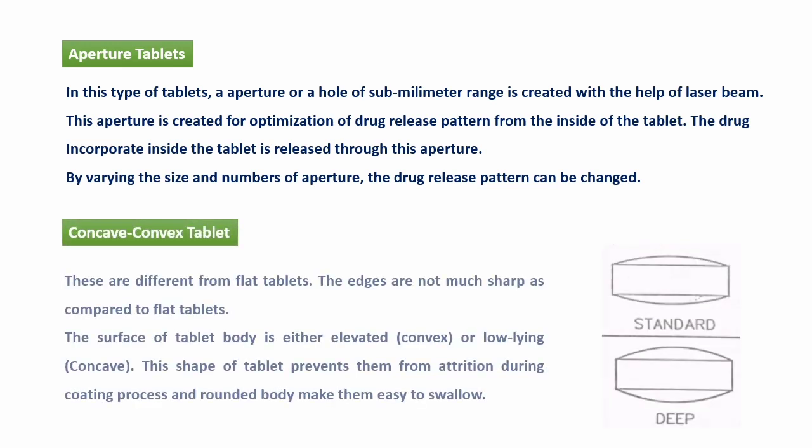Concave/convex tablets — ये simple compressed tablets हैं जिनका shape image में देखा जा सकता है। अगर tablet की surface उठी हुई है तो it is called a convex tablet, और अगर surface थोड़ी गहरी है तो वो concave tablet है। इस तरह की surface होने से coating के time tablet के किनारे breakdown नहीं होते क्योंकि tablet roll होती रहती है — there is less abrasion due to this kind of shape।